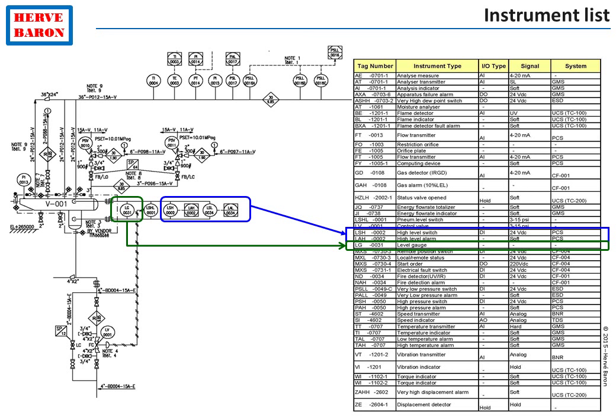Once the instrument list has been produced, each field instrument must be specified and a data sheet is produced to this end. A process data sheet has already been issued for some instruments, such as control valves, pressure safety relief valves, and flow instruments.